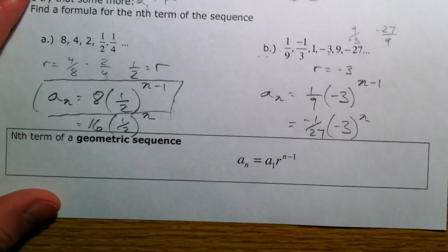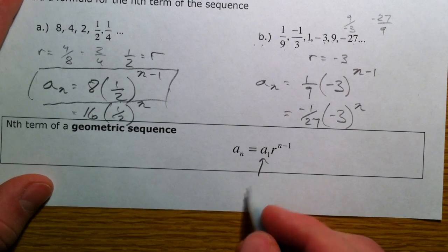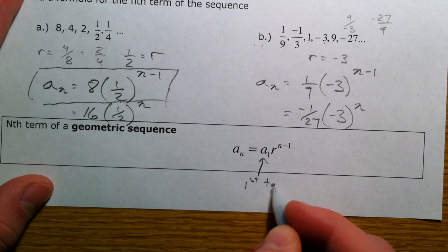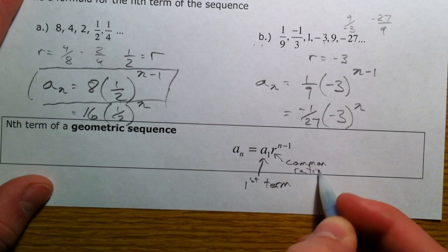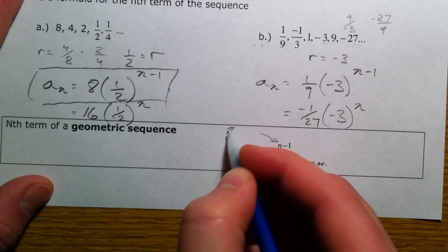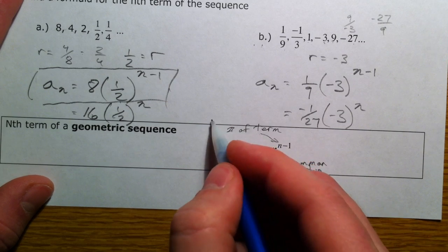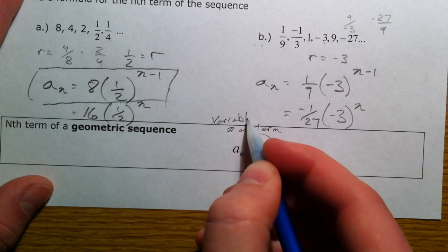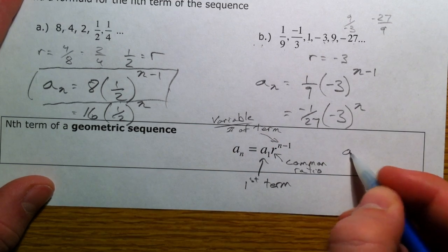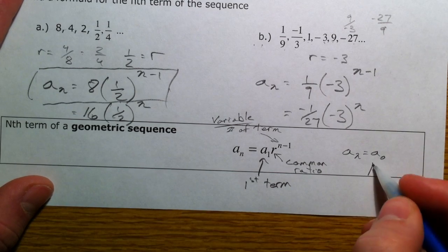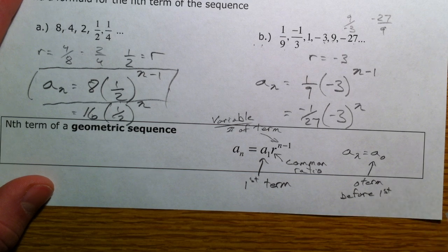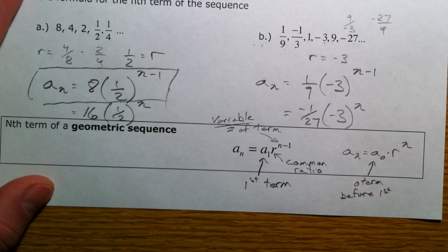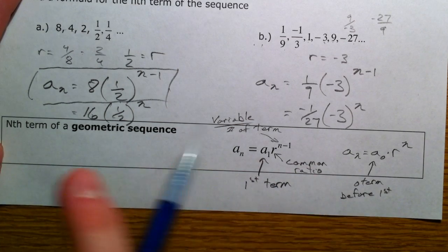So what we have been doing in the general formula to find the nth term of a geometric sequence will always be a sub 1, your first term, r your common ratio, and n equals the number term. Typically your variable, well it's always your variable in your equation, in your nth term equation. We've also been doing a sub n equals a sub 0, the 0 term, the one before the first, times r raised to the n. And that works as well. This is the one we see more commonly published in the books and all that.